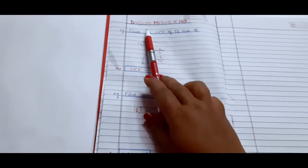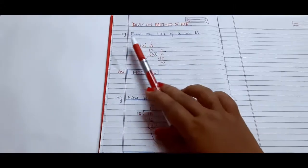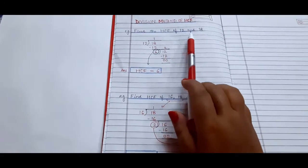So now we will start the division method of finding HCF. For example, find the HCF of 12 and 18.